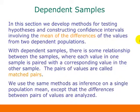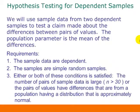With dependent samples, there's some relationship between the samples, where each value in one sample is paired with a corresponding value in the other sample. The pairs of values are called matched pairs. We use the same methods as inference on a single population mean, except that the differences between pairs of values are analyzed.